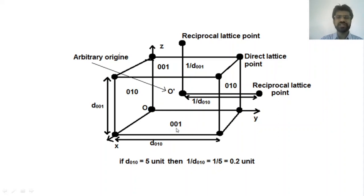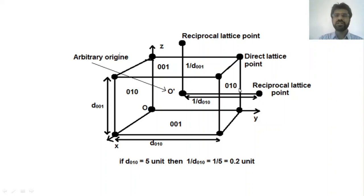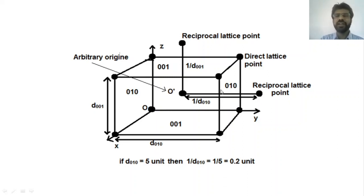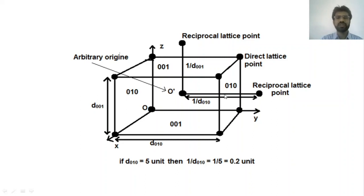This plane has Miller indices 010. Now consider any arbitrary origin O'. From this origin, if we draw the normal to this plane — the plane having Miller indices 010 — these two planes are parallel with each other. If we consider the distance between these two planes equal to 5 units, then draw the normal from this arbitrary origin.